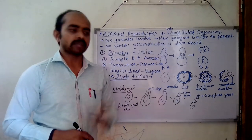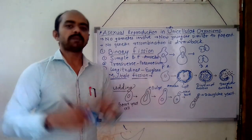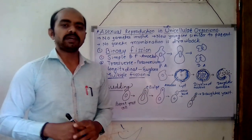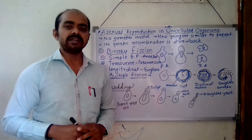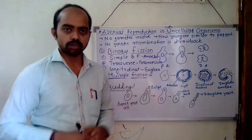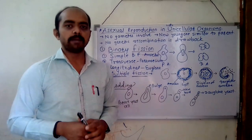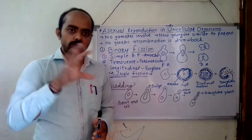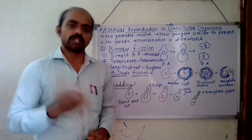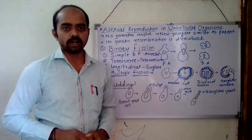In living organisms, male and female both partners contribute their gametes. Normally, the male gamete is known as sperm and the female gamete is known as the egg. This combination of gametes fuses with each other and forms a particular new young one. This is sexual reproduction.